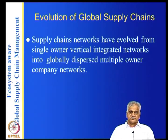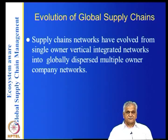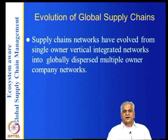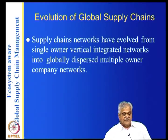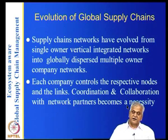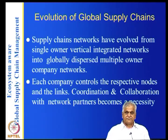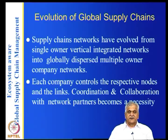With outsourcing in electronics and auto industries, supply chains have become globally or regionally dispersed with multiple owner networks. In auto, design is done by GM, Chrysler, or Toyota, but several suppliers supply materials against orders from the OEM. Each company controls its respective nodes and links, and if you represent the entire supply chain as a graph, each supplier is a node and edges represent who supplies to whom.